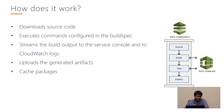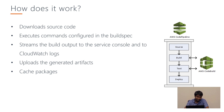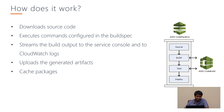How AWS CodeBuild works: it downloads source code and executes commands configured in a build specification file. The build specification is a YAML file maintained in our code repository that tells CodeBuild what commands to run — testing, building, and everything. CodeBuild streams the build output to CloudWatch logs and the service console automatically. We can also upload generated artifacts and cache packages such as node modules, so they won't be downloaded every time it builds, saving time.